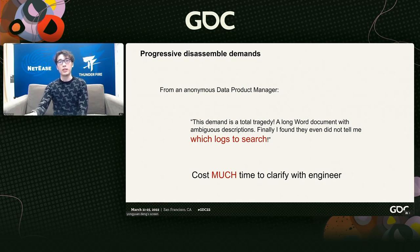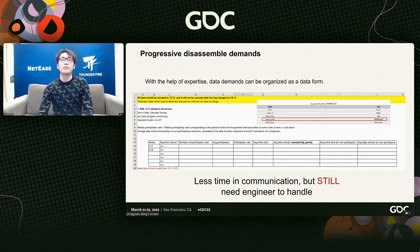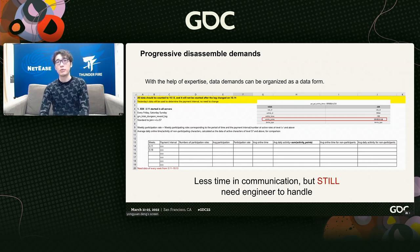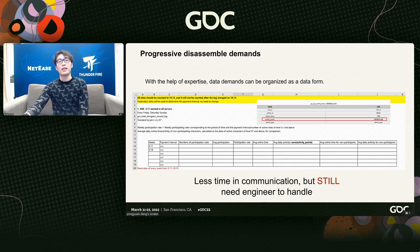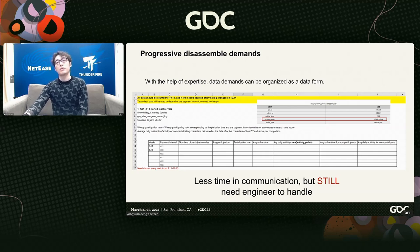It was obvious that the process cost much time for designers to clarify exact demands with data product managers and engineers. Gradually, our data engineers worked out a regulation for designers to follow. Designers were required to provide an Excel file including important messages and rules to add to the SQL code — for example, time information like 'every Friday, Saturday, Sunday from March 11th,' the logs to check such as the GM Trials dungeon reward log, and inner logic like average daily activity. This costs less time in communication, but engineers still need to handle the SQL search operation.